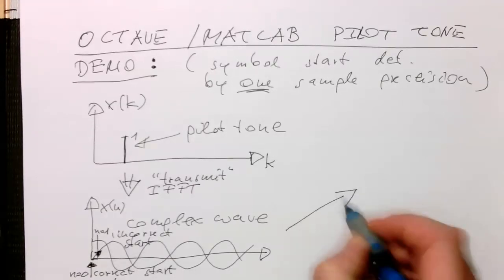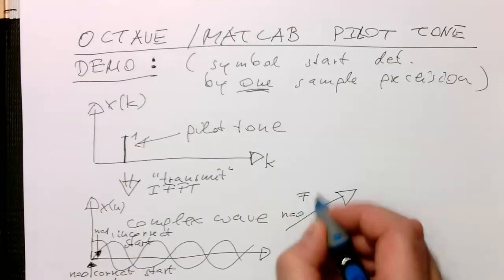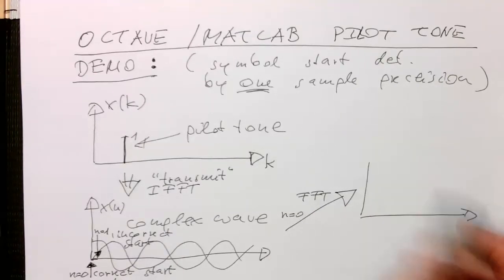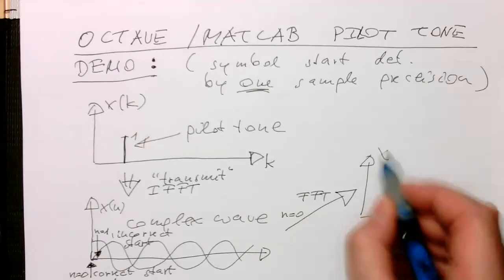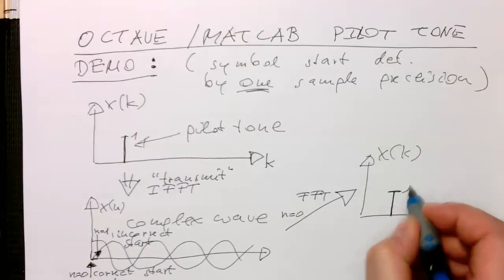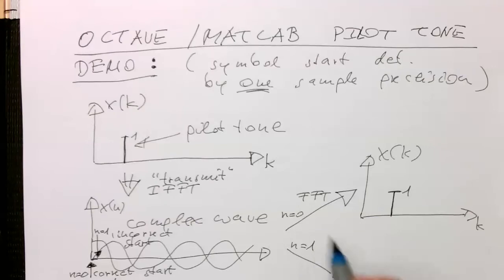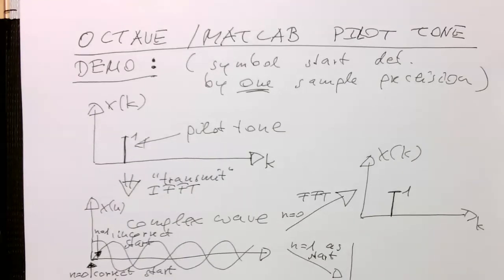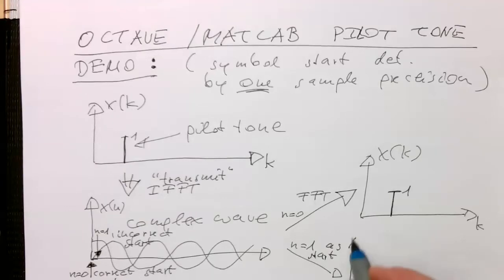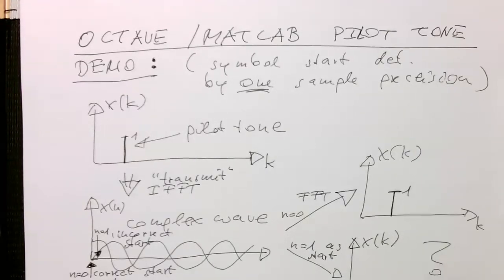So we do our correct start here at n equals 0, we do a Fourier transform. And then hopefully what we're getting out there, if we have got the k and the x of k here, that we're getting here again, our tone here with one, just a real value. And the question is now, what if we do n equals 1 as start. So if we're just taking away one sample, for example, appending this to the end or so. So if we have here an x of k, then the question is, what do we get out here?